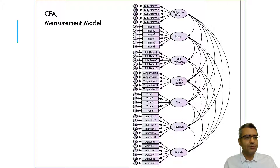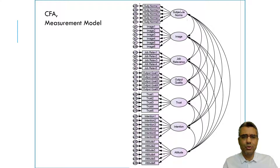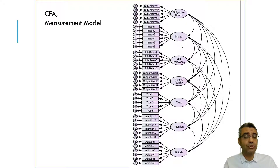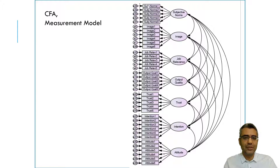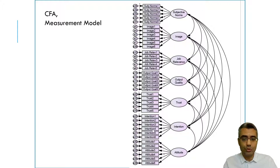Some people ask whether we need to put all constructs in the model — yes, we do not test them one by one separately, because the results will be different. You put all constructs together because the relationships between the items of each construct with the items of other constructs should be assessed too.